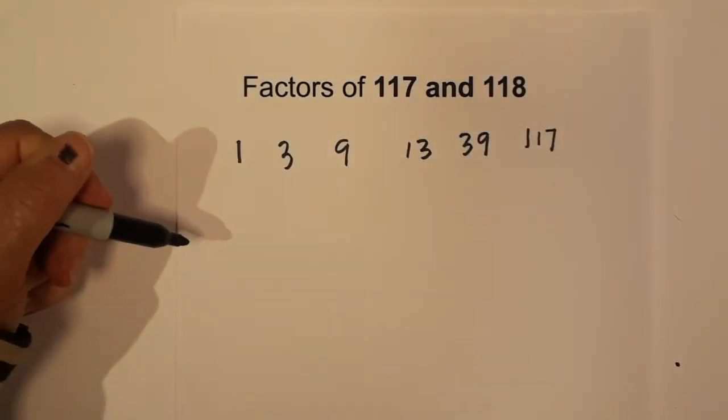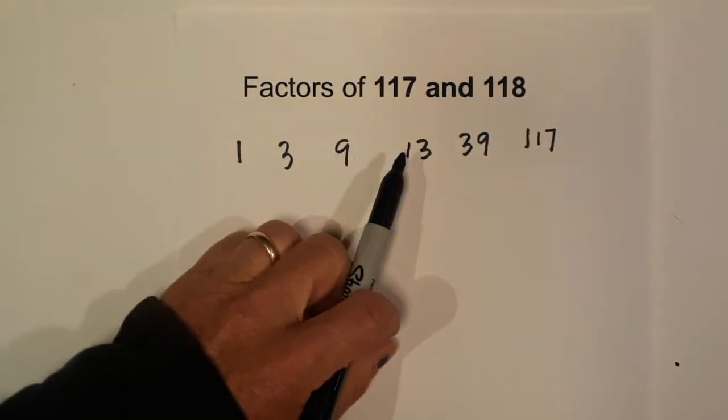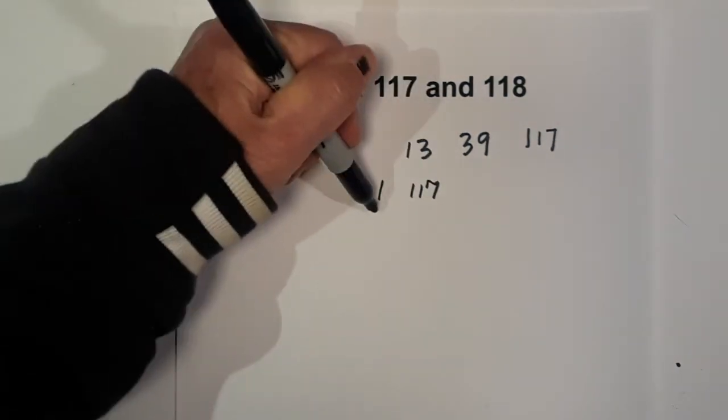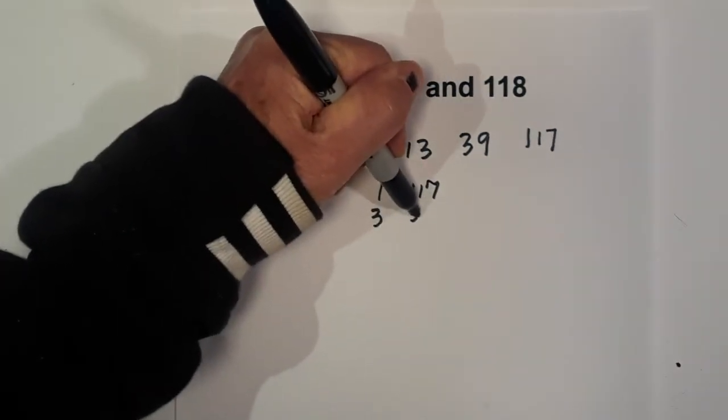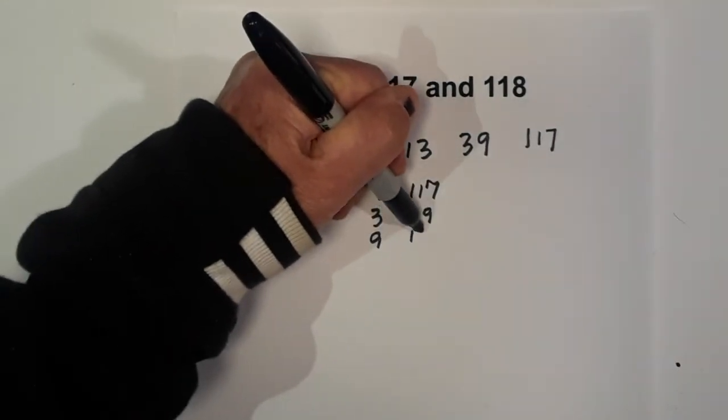So the factors of 117 are 1, 3, 9, 13, 39, and 117. In pairs, you have 1 times 117, 3 times 39, and 9 times 13.